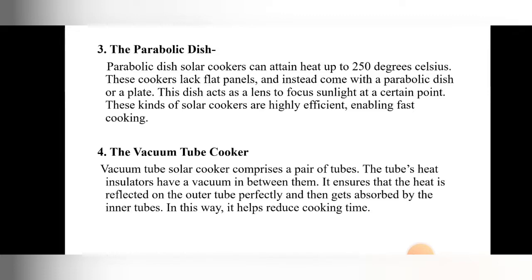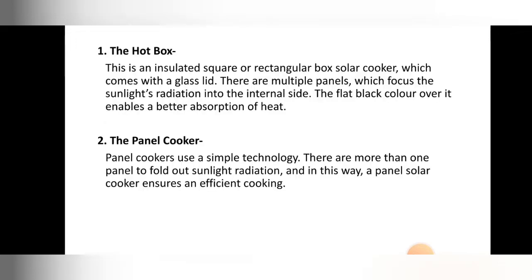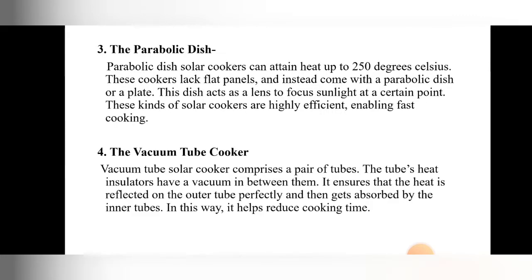The fourth type is the vacuum tube solar cooker. It comprises a pair of tubes where the heat insulators have a vacuum between them. This ensures that heat is reflected on the outer tube perfectly and then absorbed by the inner tubes, reducing cooking time. So the four types are: hot box cooker, panel type, parabolic dish type, and vacuum tube solar cooker.